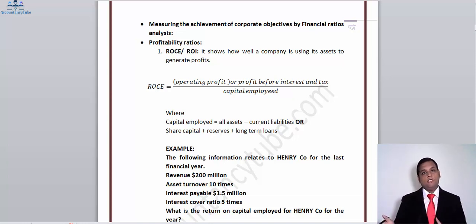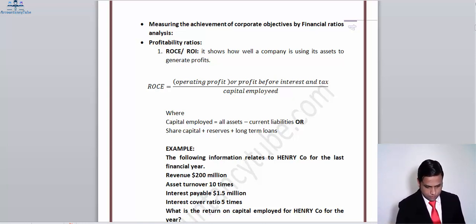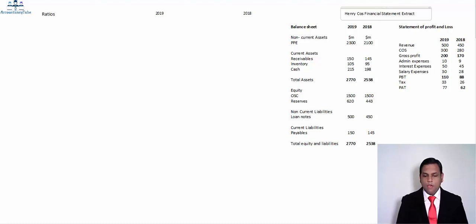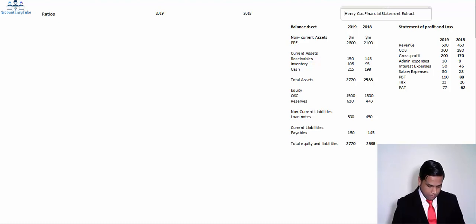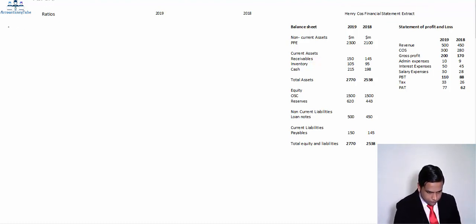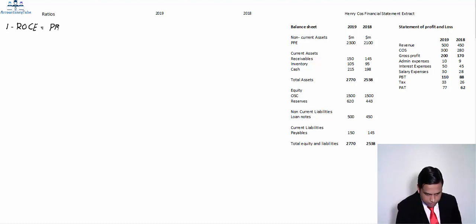For a better understanding, we will use the financial statement extract of Henrico. The best way to learn ratios is through computation with a financial statement extract. The first profitability ratio is ROCE, which is PBIT divided by capital employed.